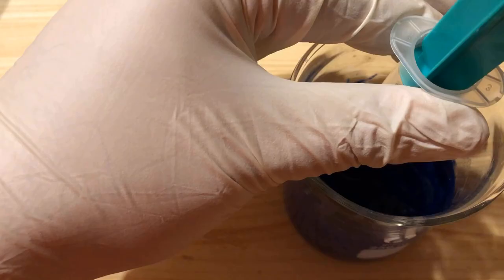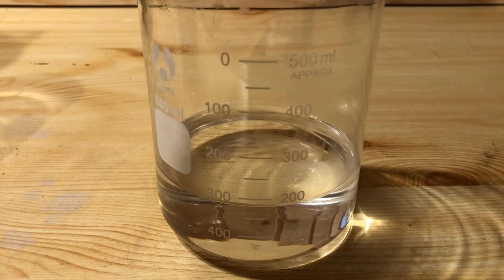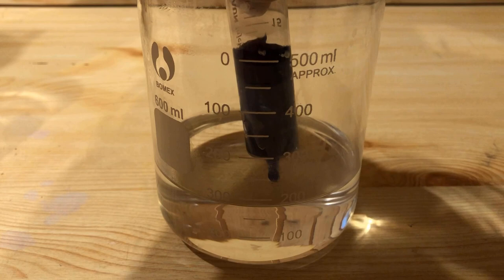The viscous solution is now filled into a 20 milliliters disposable syringe. The opening of the syringe is dipped into the prepared sodium hydroxide solution and a uniform pressure is applied to the syringe plunger.